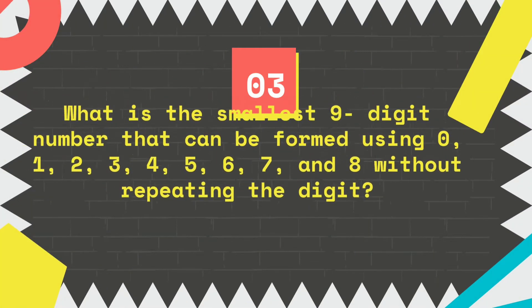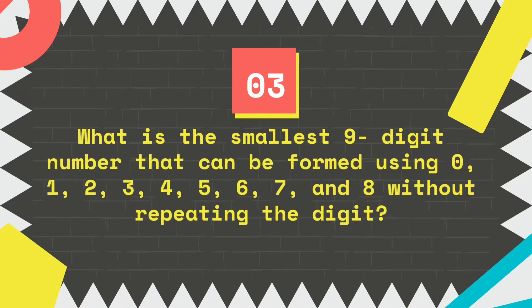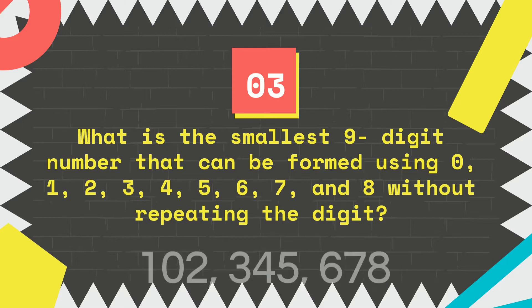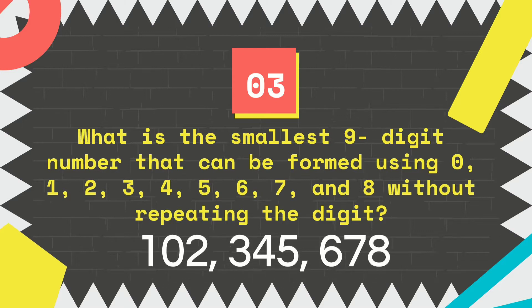Number 3: What is the smallest 9-digit number that can be formed using 0, 1, 2, 3, 4, 5, 6, 7, and 8 without repeating the digit? It's 102,345,678.